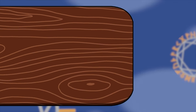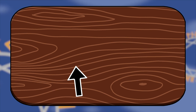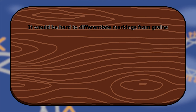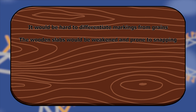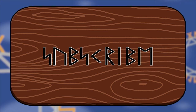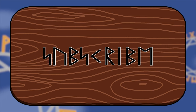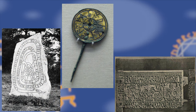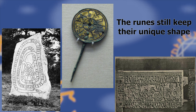When wooden slabs are taken from a tree, they still preserve the tree's grain. If markings were made alongside these grains, it would be hard to differentiate markings from grains, and the wooden slabs would become weakened and prone to snapping. If markings were made any other way, they would easily stand out from the grain and wouldn't weaken the slab. That runes have no curves and no horizontal twigs tells us that they, primarily, were carved into wood. The overwhelming majority are carved into other materials — rock, metal, or bones — but the runes still mostly keep their unique shape.